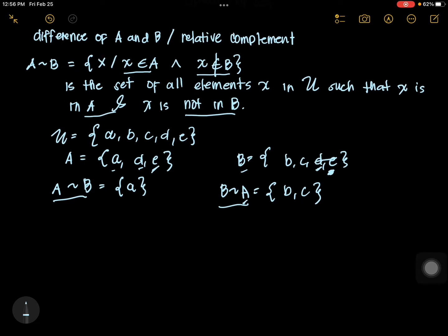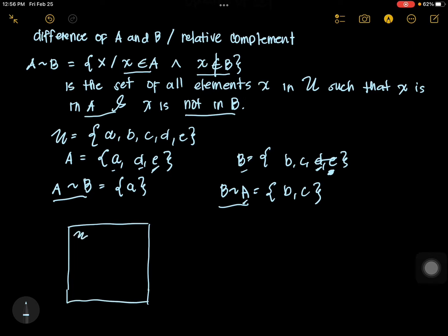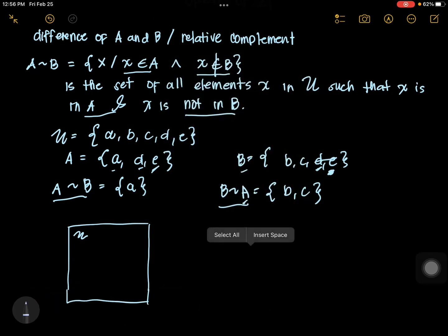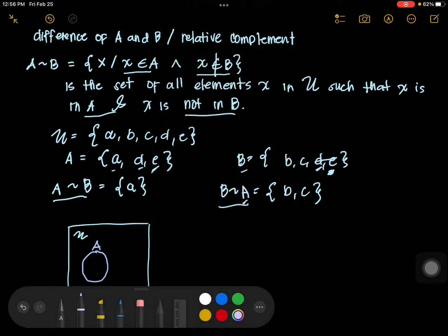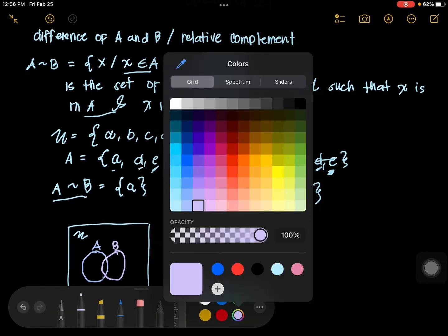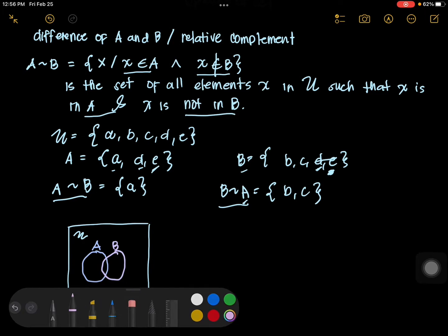Let's have a Venn diagram to illustrate it more. If we have the universal set with circles A and B, if you are looking for the difference A minus B, you are only going to shade the part of A that does not include the intersection, and we do not include anything in B.